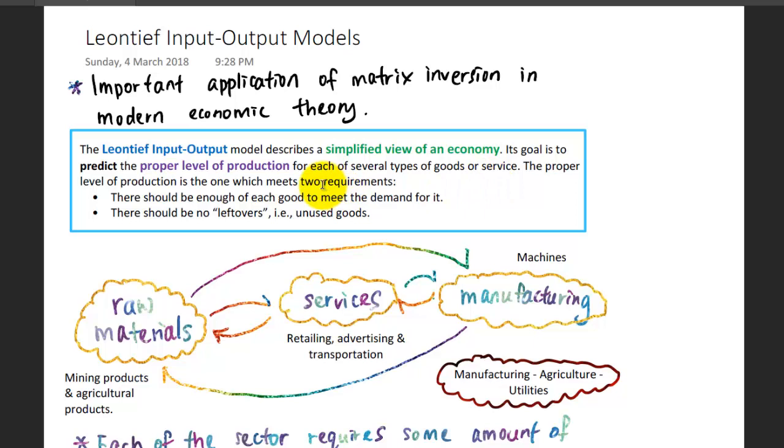Its goal is to predict the proper level of production for each of several types of goods or services. The proper level of production is one which meets two requirements: there should be enough of each good to meet the demand for it, and there should be no leftovers or unused goods.